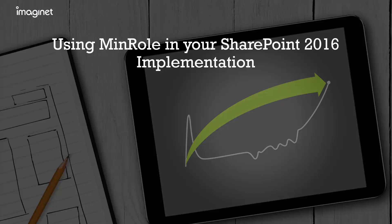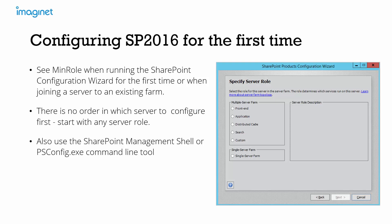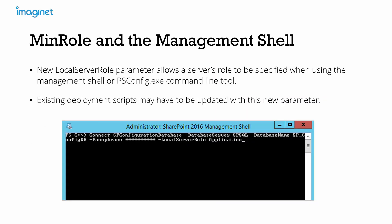Now we'll go over using MinRole in your SharePoint 2016 farm. After installing SharePoint 2016, you'll see MinRole when you first run the configuration wizard. There's no required order in which to configure servers — you can start with any role — but the first server you configure automatically hosts central administration, so you'll typically want to start with the application server. You can also specify a server's role through the SharePoint Management Shell or through the psconfig utility, using the new local server role parameter. Existing deployment scripts may need to be updated with this new parameter.